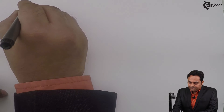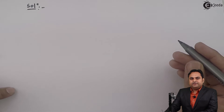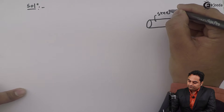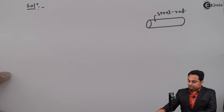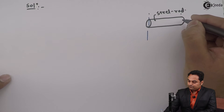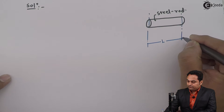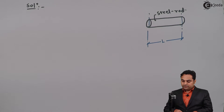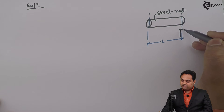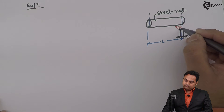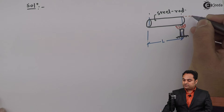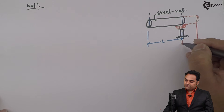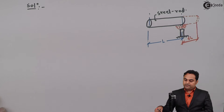In the solution, I will first draw a diagram to explain better. Here we have a steel rod of length L. It is heated through 120°C, and when heated it will expand. This is the free expansion of the steel rod, denoted by delta L.